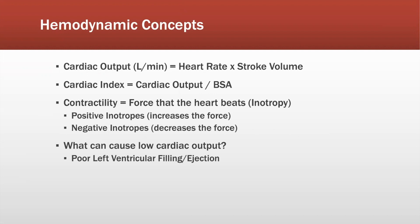Cardiac output is liters per minute, and this is heart rate times your stroke volume. Your cardiac index equals the cardiac output over your body surface area. Your contractility is the force that the heart beats — that's inotropy. We will learn about positive inotropes and negative inotropes, which will either increase or decrease the force with which the heart can beat. Low cardiac output is caused by poor left ventricular filling or ejection. The cardiac index is the cardiac output based on the patient's body surface area.